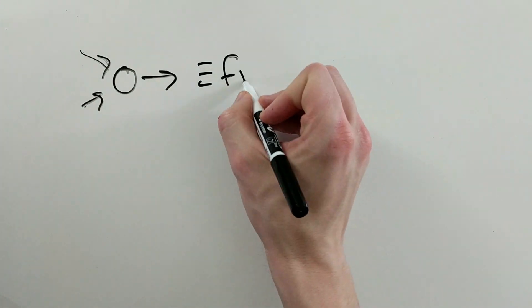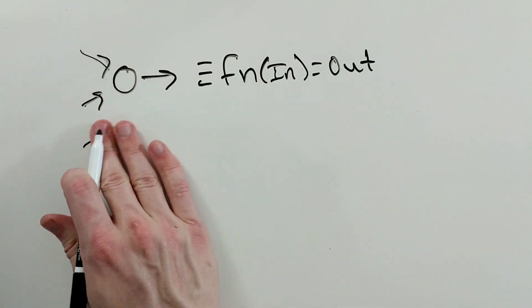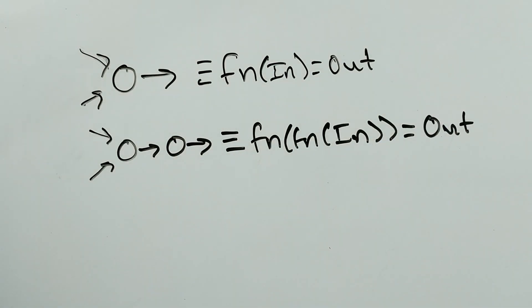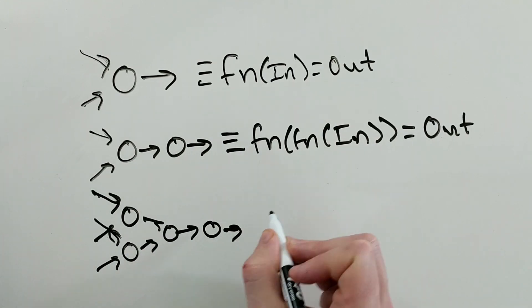Every layer in our network just adds another layer of nesting to the function we are building. So when we create an artificial neural network, all we are doing is creating a complicated function on the inputs.